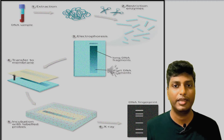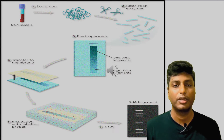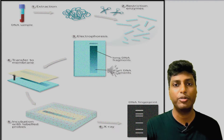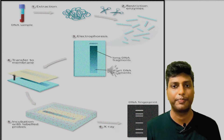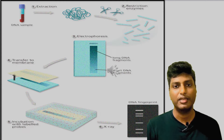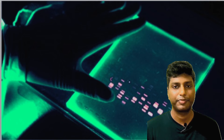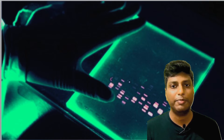Once the DNA fragments have been transferred, this is where the role of VNTRs comes in. VNTR probes are added onto the nylon membrane. These VNTR probes are complementary VNTR sequences which bind to the actual VNTRs present inside the DNA. Once the VNTR probes are added, the final step is that these nylon membranes are observed under UV light, and a distinctive DNA band pattern is observed.